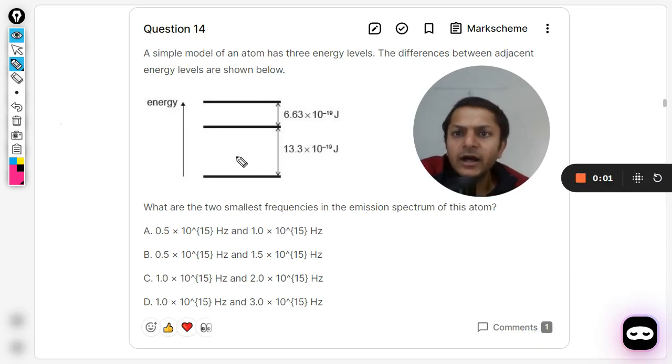In this question, let's see: a simple model of an atom has three energy levels. The differences between the adjacent energy levels are shown. What are the two smallest frequencies in the emission spectrum of this atom?